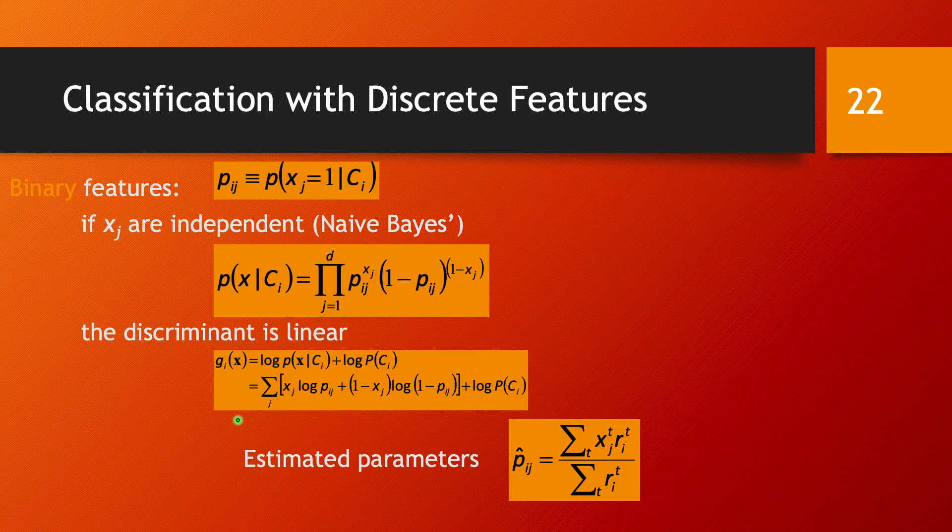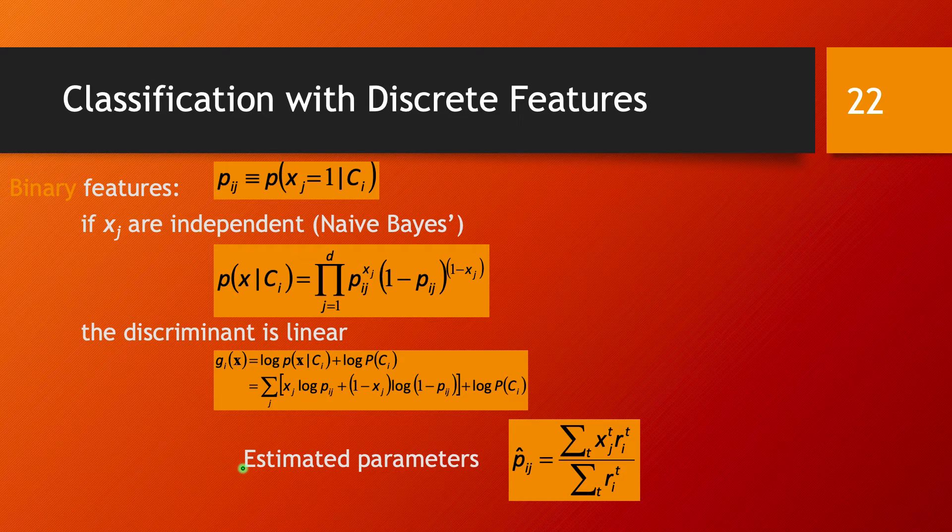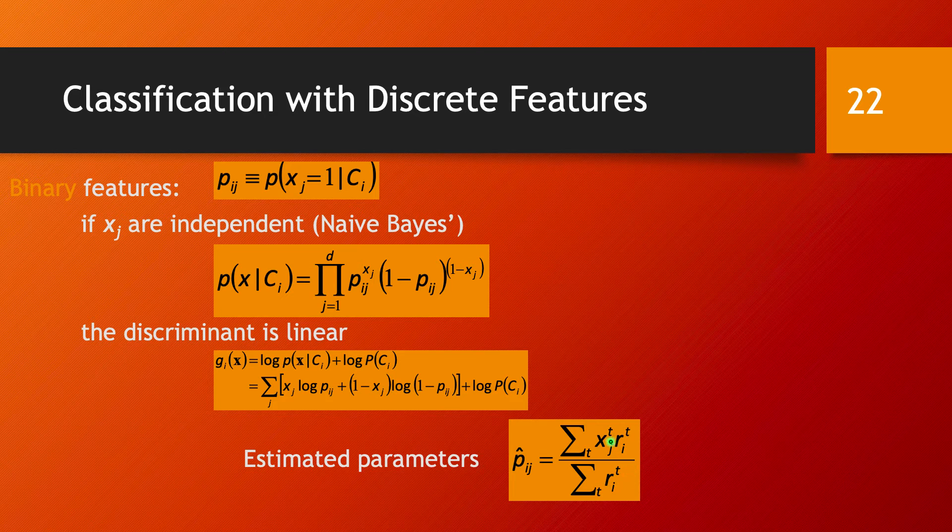We can estimate the parameter using maximum likelihood. The estimator is simply of this form: it's just a count of how many ones we have in class C_i divided by how many samples we have in that class. This is very similar to the univariate case.